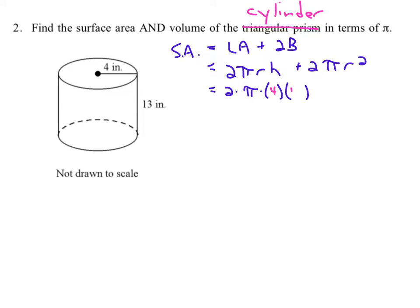And what's the height? They give it to us as 13. Plus 2 times π times the radius squared, and what's the radius that they give us? They give us a radius of 4.